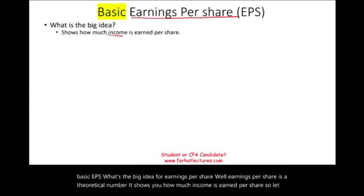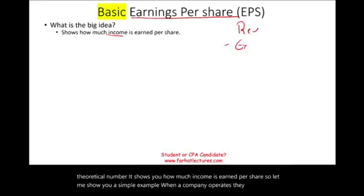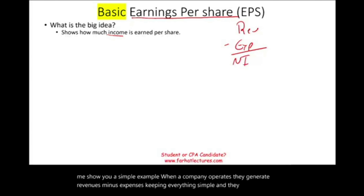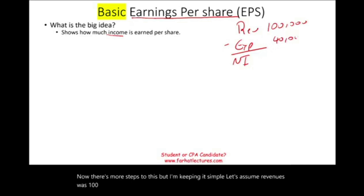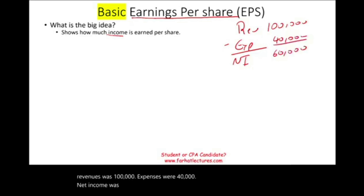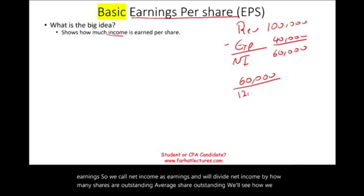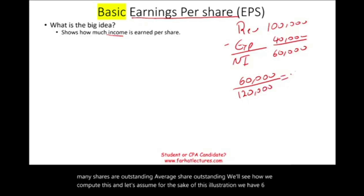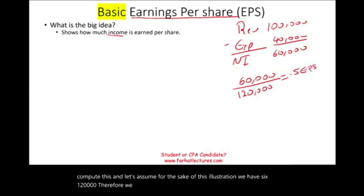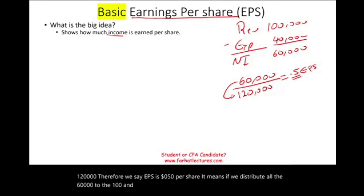Let me show you a simple example. When a company operates, they generate revenues minus expenses and get to net income. Let's assume revenues were 100,000, expenses were 40,000, net income was 60,000. We take net income — theoretically earnings — and divide it by the weighted average shares outstanding. Let's assume 120,000 shares. Therefore, EPS is 50 cents per share. If we distribute all the 60,000 to the 120,000 shares, each share will earn 50 pennies. And this is called basic.